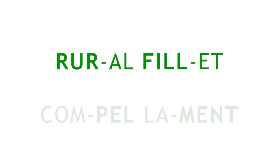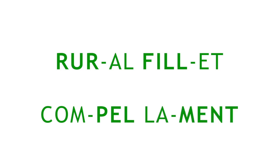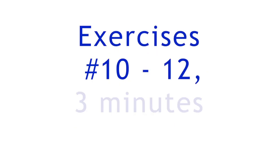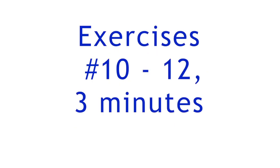Now we're off to the PhD level. Unaccented syllables are often mushed to the schwa sound of 'uh,' especially common at the end of words, as in 'rural' and 'fillet.' When the last syllable is accented, the sounds will not schwa, as in 'compel' and 'lament.' U is already a relaxed sound, so it's already mushed. I usually holds its sound. A and O are most likely to mush to the 'uh' sound. E's will generally mush to a short I sound. At the end of a word, Y has its long I sound when accented, but the long E sound in unaccented syllables, as in 'deny,' 'misapply,' 'cruelty.' Now three — number 10, 11, and 12. See you back in three minutes.